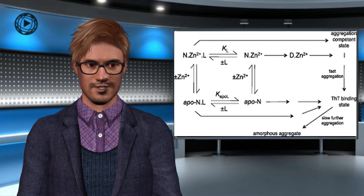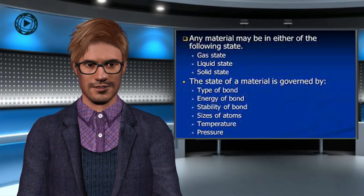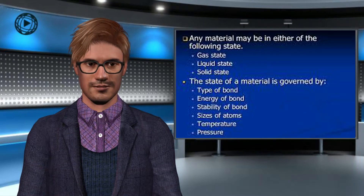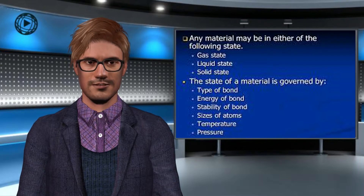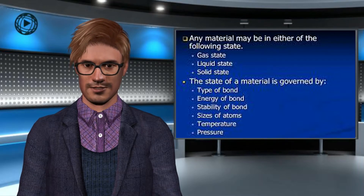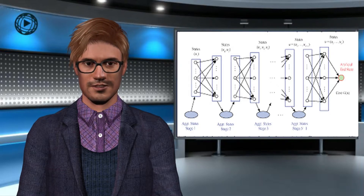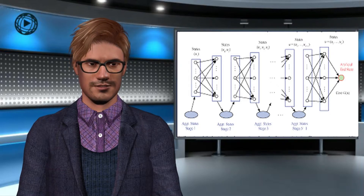There are four basic states of aggregation: solid, liquid, gaseous, and plasma. The solid retains its shape and volume. Liquids retain only volume, but not form. Substances in the gaseous state retain neither volume nor form.